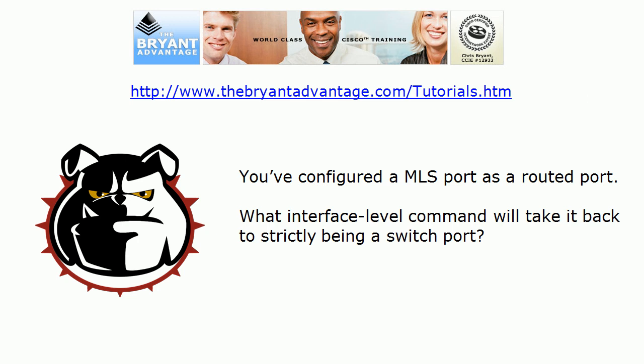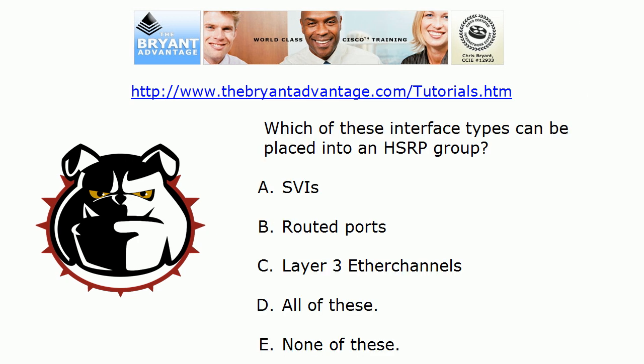Now that you've successfully configured a multi-layer switch port as a routed port, what interface-level command would take it back to strictly being an L2 switch port? Finally, we're introduced to several interface types: SVIs (switch virtual interfaces), routed ports, and Layer 3 EtherChannels. Which of these can legally be placed into an HSRP group — or is it all of them, or none of them?